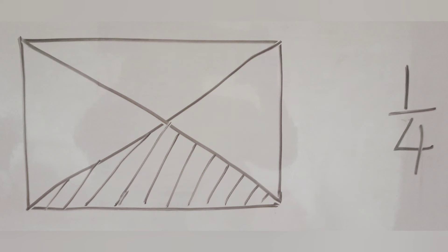So, we say that the fraction of the rectangle that is shaded is 1 quarter because only one part is shaded out of the 4 equal parts.